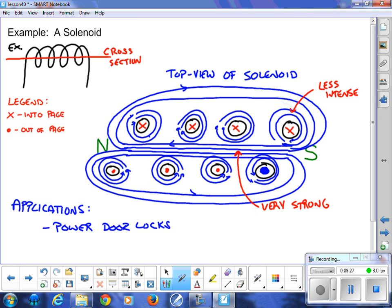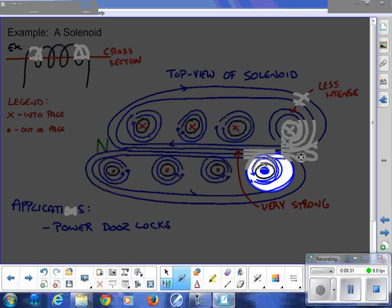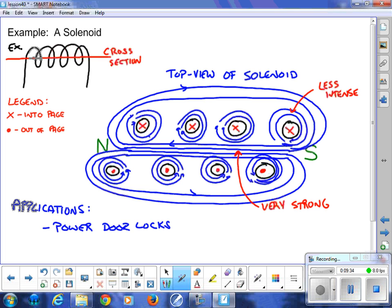X is into the page, so that means my thumb would go into the page right here, and the result would be a clockwise circular field. That's true for all four of the wires on the top. Dot is coming out of the page, so my thumb is oriented out of the page, which tells me that my magnetic field is going in a counterclockwise direction. When I grab this, my fingertips have to go into the page. So place your fingertips on the X's.